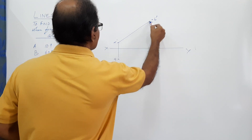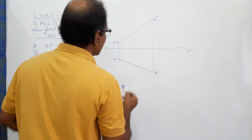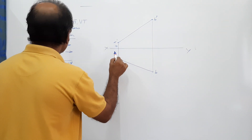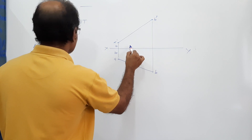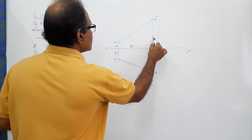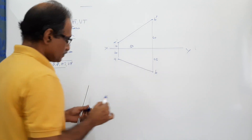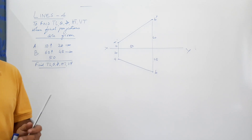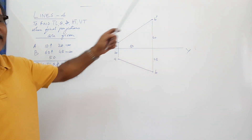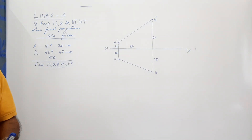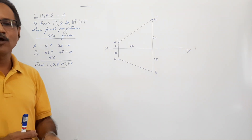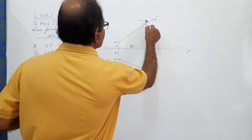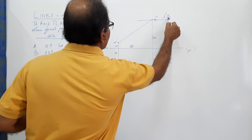Connect a-dash and b-dash, and also a and b. For convenience I am writing down the dimensions now, not in the correct manner but for your reference: this is 50, this is 60, and this is 45. Now, you know that there is a line through b-dash - that line is called the locus of b in elevation. Draw that.